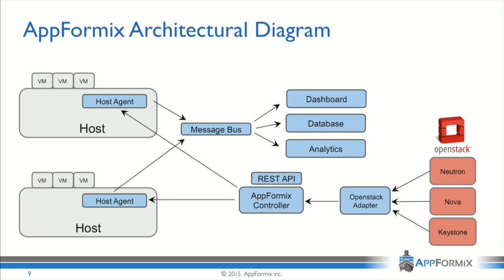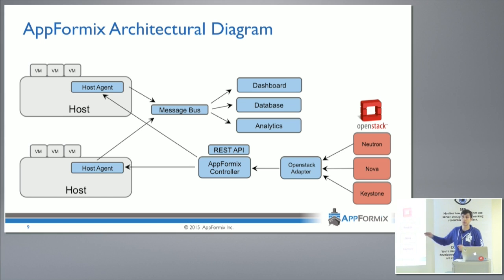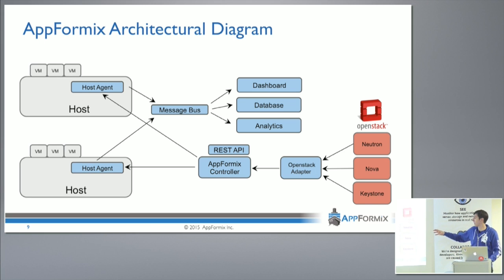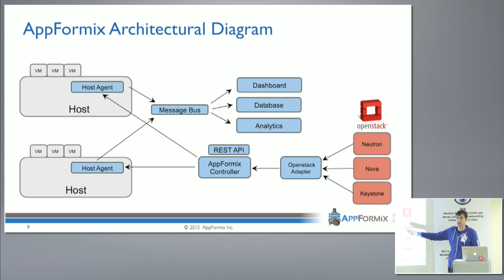We have a series of pieces using our APIs to provide configuration. The OpenStack adapter is what actually does the talking to Nova, Neutron, and Keystone, taking that discovered information and configuring the AppFormx controller through the REST APIs. Similarly, if this were a Kubernetes or Docker environment, we would have a different adapter — knowledgeable about the details of Kubernetes — that maps from that to our data model in the AppFormx system.